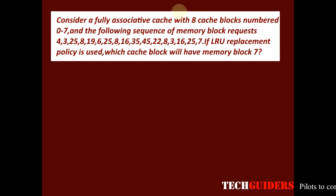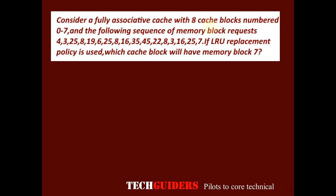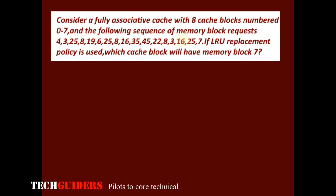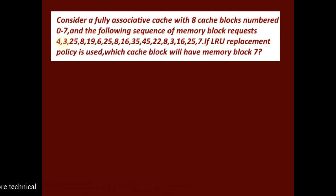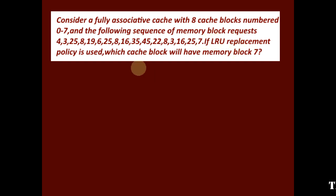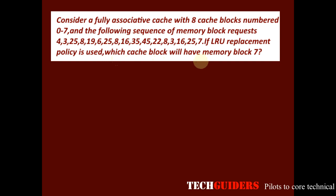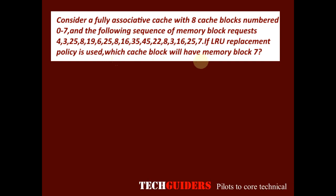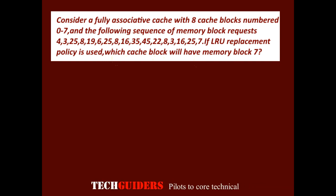Consider a fully associative cache with 8 cache blocks numbered 0 to 7 and the following sequence of memory block requests. If LRU (least recently used) replacement policy is used, which cache block will have memory block 7?